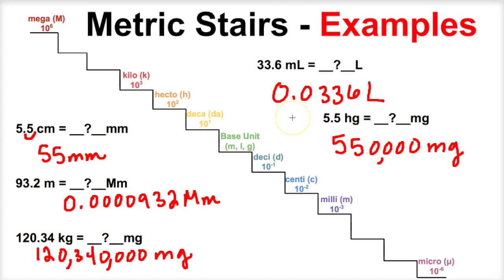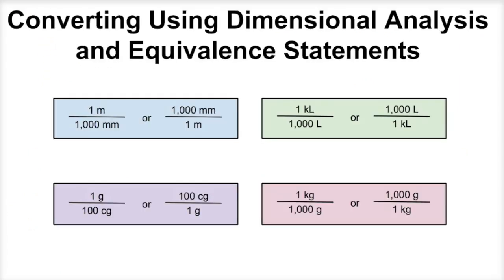Okay, so that is how we do metric unit conversions or SI unit conversions using the metric stairs, and it involves you memorizing the metric prefixes that we talked about in an earlier video. Now let's try to do some metric unit conversions using dimensional analysis. In an earlier video, we learned about dimensional analysis. And when we use dimensional analysis to do unit conversions, we have to come up with what are called equivalent statements.